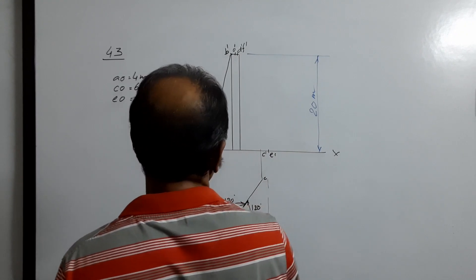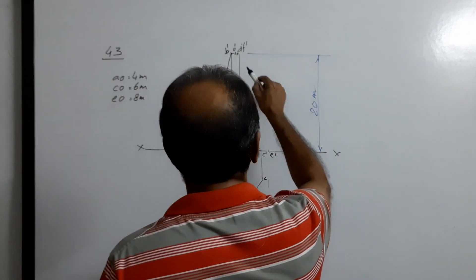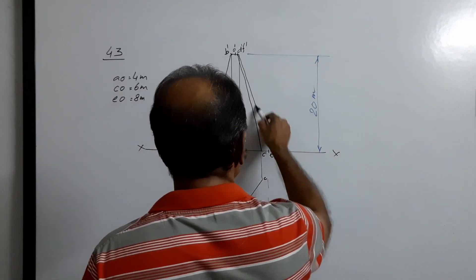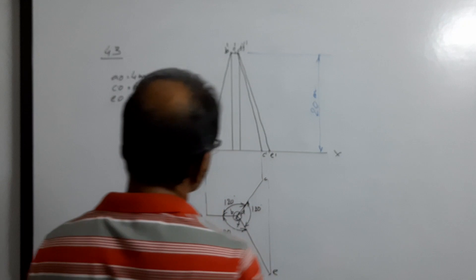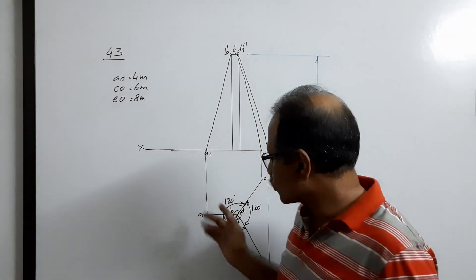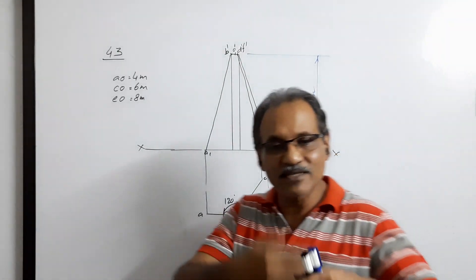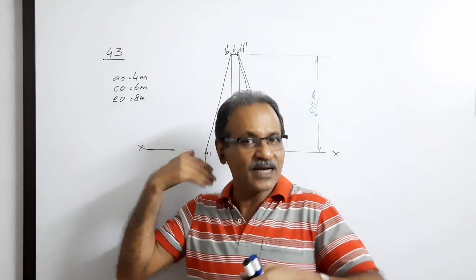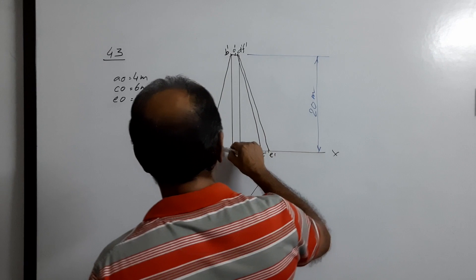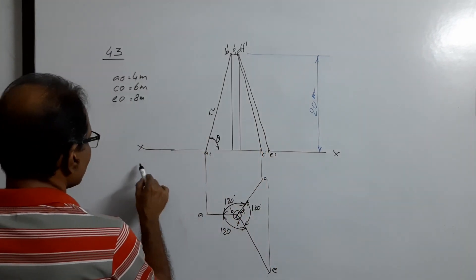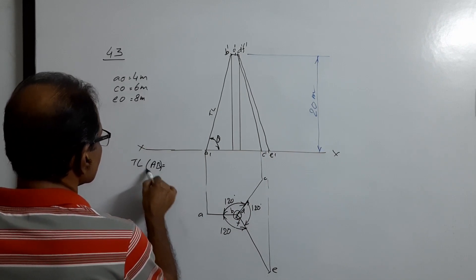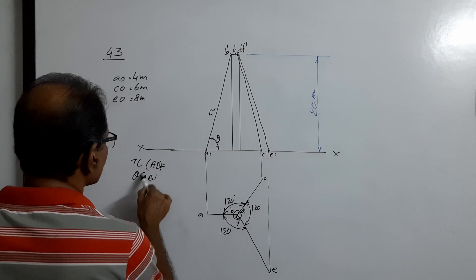A-dash B-dash is the elevation of one wire, C-dash D-dash is the elevation of the second wire, and E-dash D-dash is the elevation of the third wire. Since wire AB is parallel to VP, its plan is drawn parallel to it — meaning the wire is parallel to VP. So this itself is the true length, and this itself gives theta. The true length of AB is obtained directly, and theta with respect to VP is also directly available.